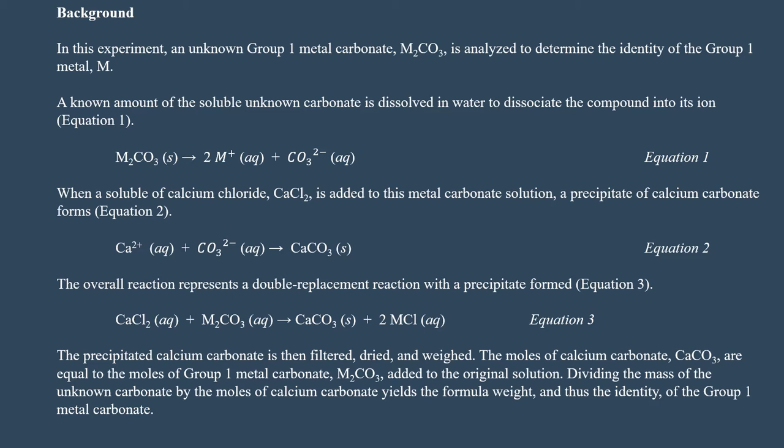Ca²⁺ plus CO₃²⁻ forms CaCO₃. The overall reaction represents a double replacement reaction with a precipitate formed, and the precipitate calcium carbonate is then filtered, dried, and weighed. The moles of CaCO₃ are equal to the moles of the group 1 metal carbonate, M₂CO₃, added to the original solution. Dividing the mass of the unknown carbonate by the moles of calcium carbonate yields the formula weight, and thus the identity of the group 1 metal carbonate.